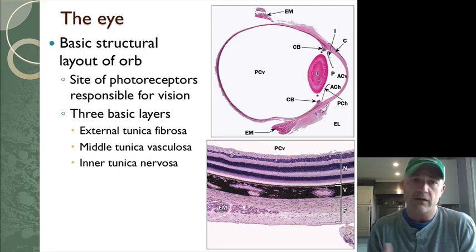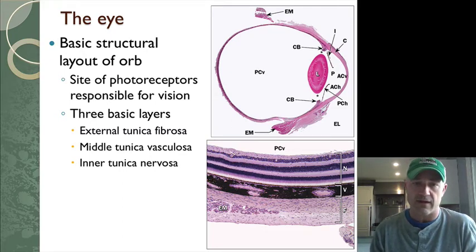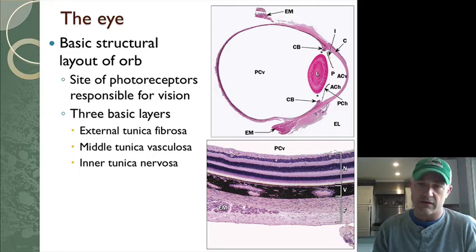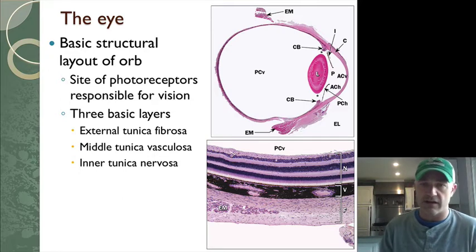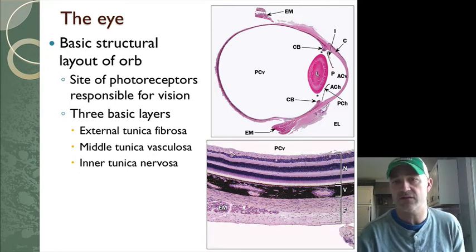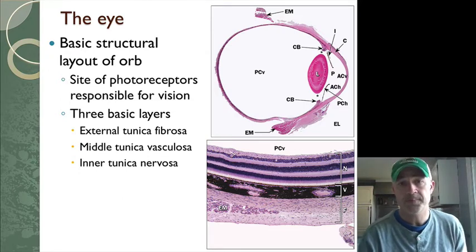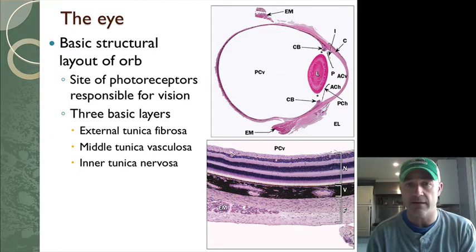We're going to look at this based on the number of tunics. We have our outer tunic, the middle tunic that has a lot of these structures, and then the inner nervous tunic, which is going to be mainly the retina.